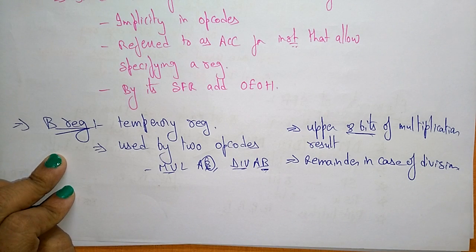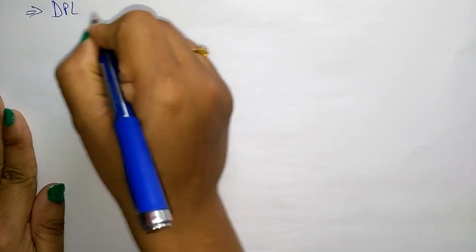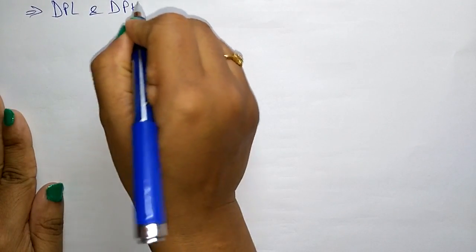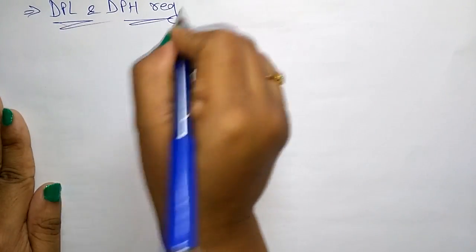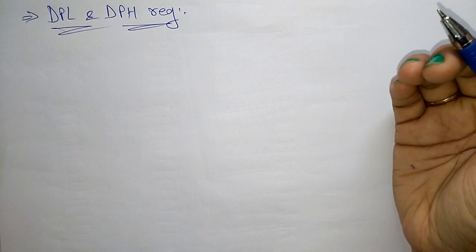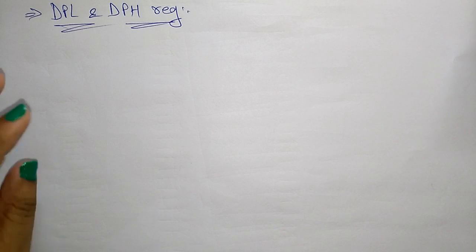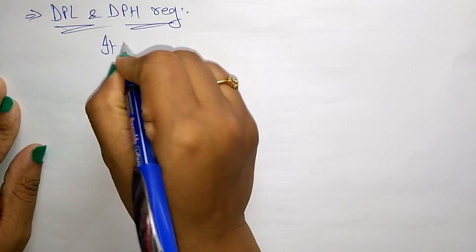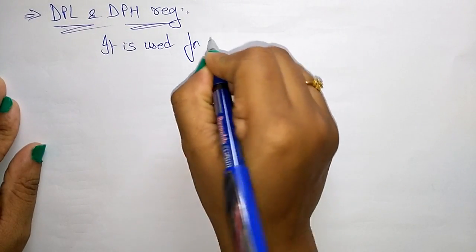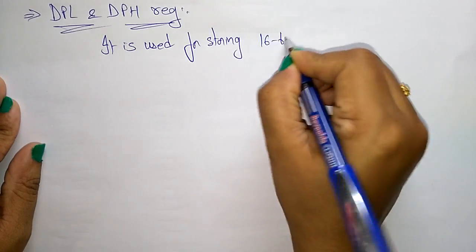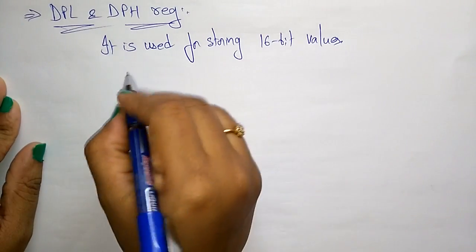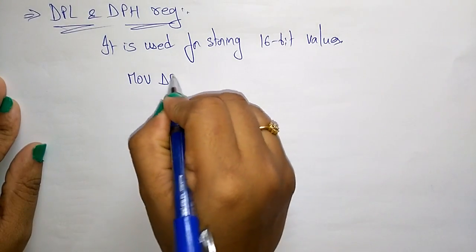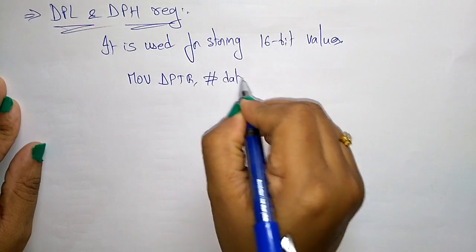The next special function register is DPL and DPH — the data pointer lower and data pointer higher registers. These registers are used to access data at address locations in external RAM or ROM devices, and are used for storing 16-bit values.